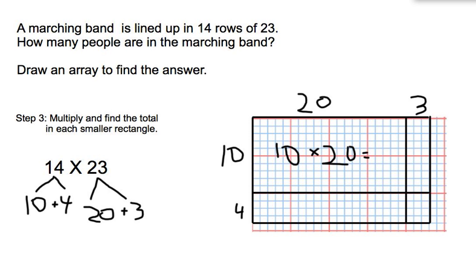You should be able to multiply mentally. The basic fact is 1 times 2, which is 2. Then you have 2 zeros in the factors. So add 2 zeros to our product for a total of 200 squares, or 200 band members in this section of the array.